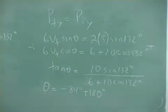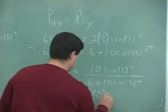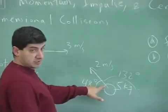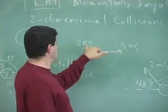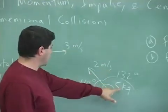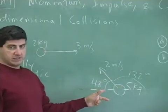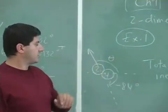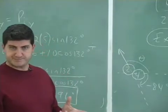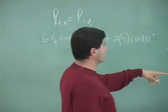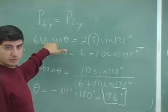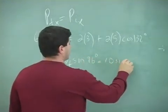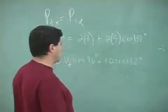Adding 180 to negative 84 gives us 96 degrees — that's the actual answer. The system moves in the second quadrant because the X component of the 5 kilogram object's momentum (10 × cos(48°) ≈ 6.7) is greater than the 2 kilogram object's momentum (2 × 3 = 6). Once we have theta = 96°, we substitute back: 6 × V_F × sin(96°) = 10 × sin(132°), then solve for V_F.